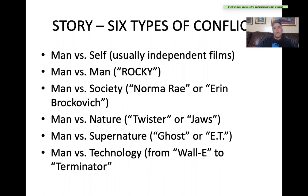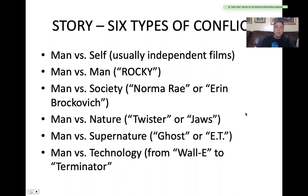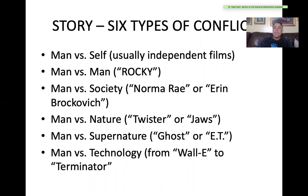Person versus society includes films like Norma Rae and Erin Brockovich, or anyone in prison. Person versus nature includes Twister or Jaws. Person versus the supernatural covers ghost movies and alien movies — you could even argue the first Jaws is person versus super-nature because of how the shark behaves like a monster. Last but not least is man versus technology, from WALL-E to Terminator to I, Robot.